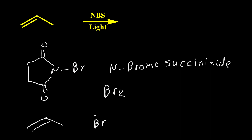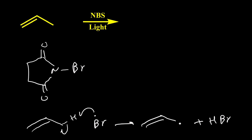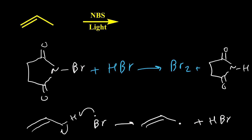Br radicals abstract one hydrogen from the allylic position and form an allylic radical plus HBr. Then this HBr can react with N-bromosuccinimide (NBS). The reaction of these two compounds forms another Br2 molecule plus succinimide. So this bromine can go through another cycle in the mechanism, and the concentration of bromine always remains very low — so we don't have the possibility of Br2 reacting with the double bond.